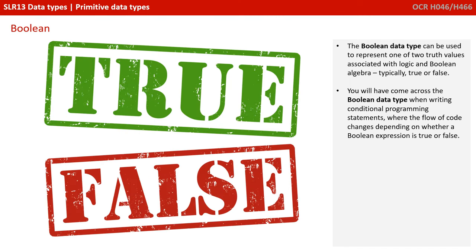The boolean data type can be used to represent one of two truth values associated with logic and boolean algebra, typically true or false. You will have come across the boolean data type when writing conditional programming statements, where the flow of code changes depending on whether a boolean expression is true or false.